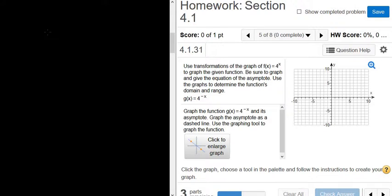In this problem, we have to graph g of x equals 4 to the negative x. So we'll start by thinking about what the graph of 4 to the x looks like.